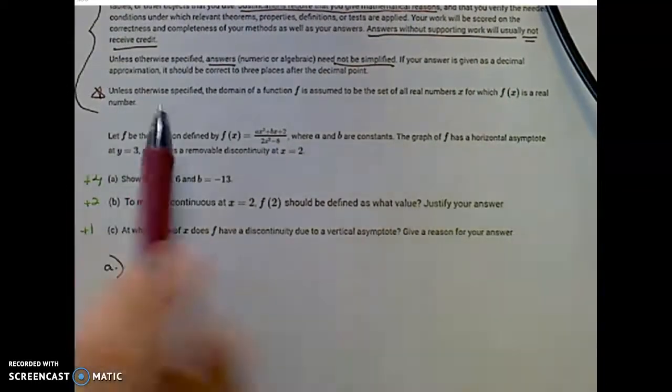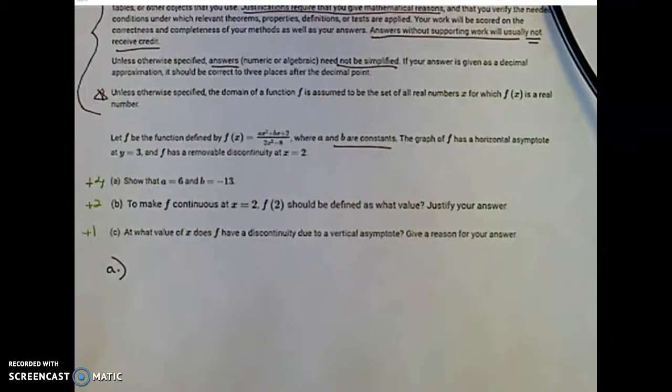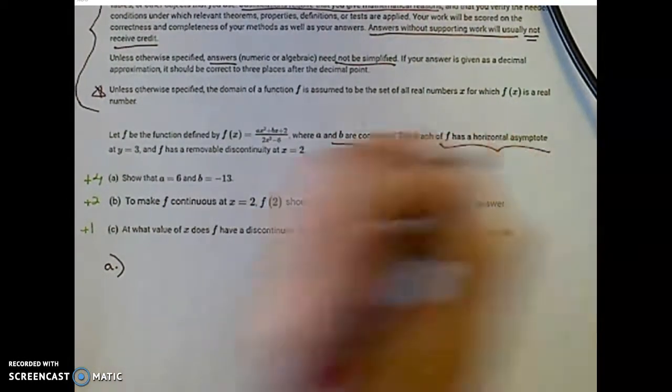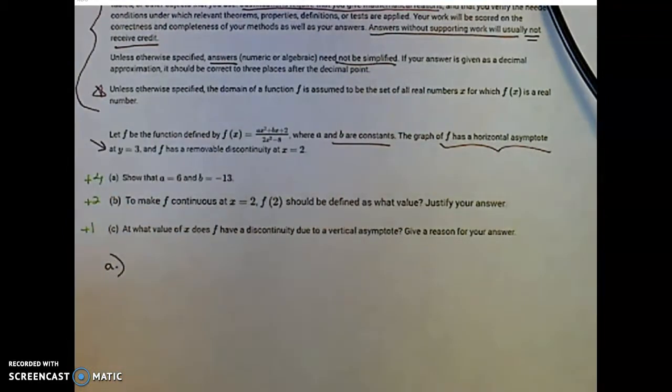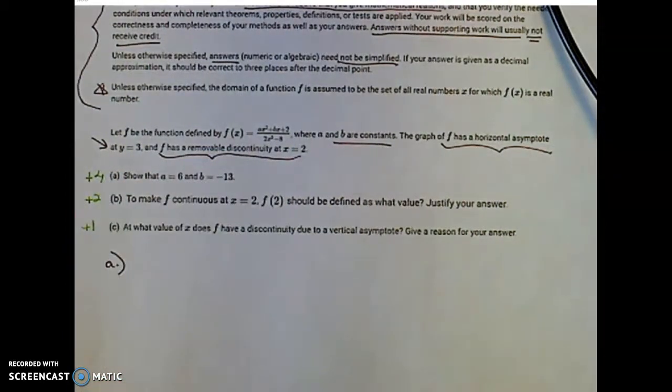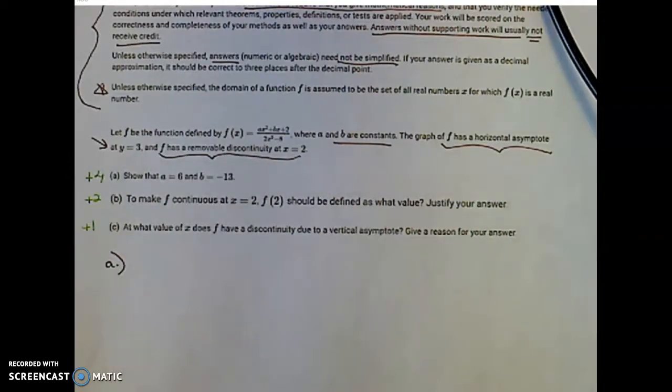Let f be the function defined by f of x. We're going to justify finding a and b, where a and b are constants. The graph of f has a horizontal asymptote at y equals 3, and f has removable discontinuity at x equals 2. One thing about the AP exam is they never give you anything that you don't need. So anything that you're given, you're going to use in your solution somehow.